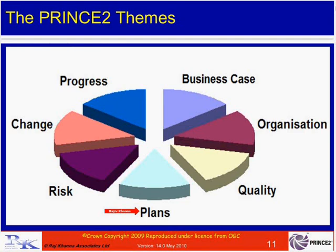The managed by stages principle is supported by the plans theme. Within a project we have a project plan, a stage plan, and a team plan. The rest of the project can be broken into multiple stages depending on the level of risk, and each stage plan is planned in detail towards the end of the previous stage. The managed by exception principle is supported by the progress theme, which covers mechanisms we can put in place — such as regular highlight reports from the project manager to the project board, and regular checkpoint reports from the teams to the project manager. With these in place, respective levels of management can manage by exception.